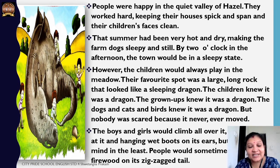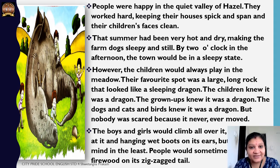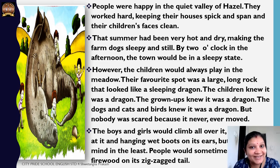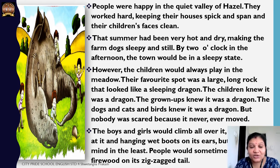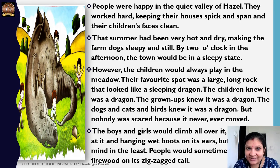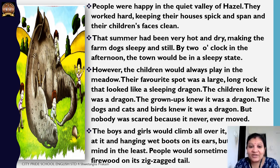The story is placed in the quiet valley of Hazel. People have worked very hard there — they keep their houses spick and span and their children's faces are always clean, meaning they maintain themselves well. As the story grows, we find there is a rock that looks exactly like a dragon, and everybody knows it's a dragon. Even the animals and birds of the village know — but nobody is scared of it because it never moves. Children in that village always play in the meadow.